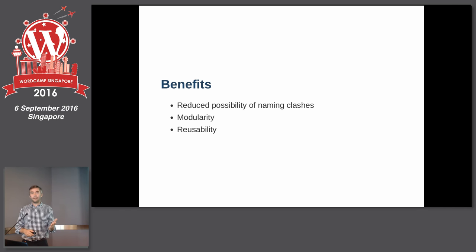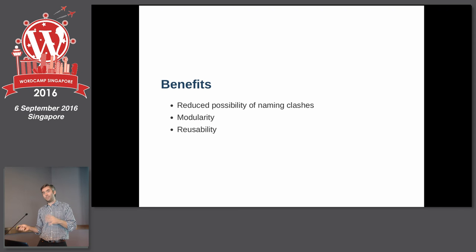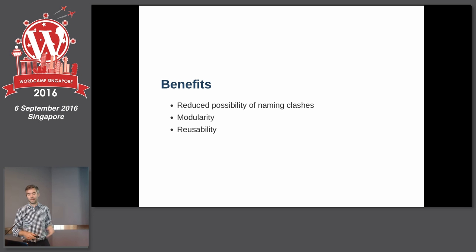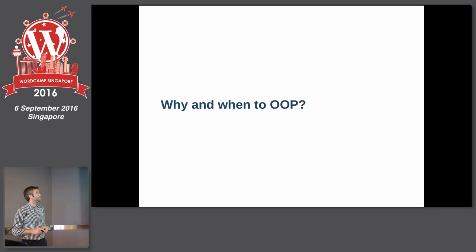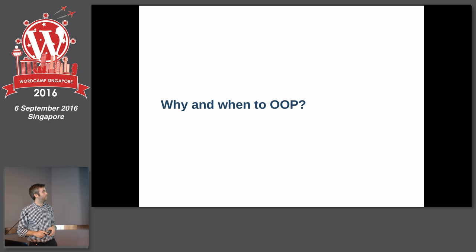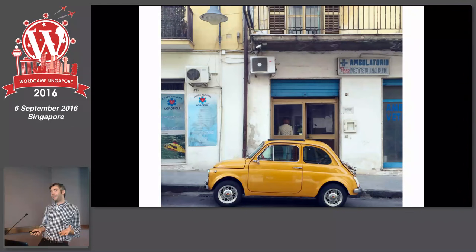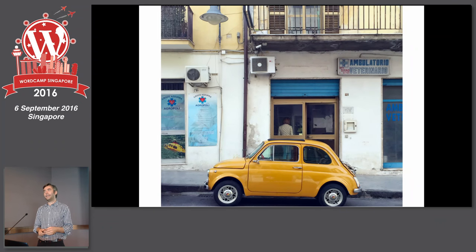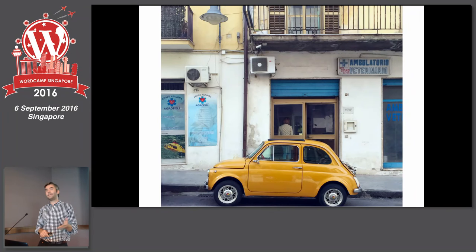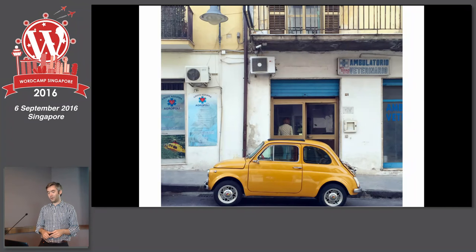Other benefits are modularity — it's possible to be modular with other types of programming, but it's by design with OOP — and reusability. You can make reusable code that's not object-oriented, but it's more obvious how it works when you're starting with something object-oriented. So why and when to program in an object-oriented manner? This is the classic thing people do when explaining OOP — talk about a real-world object.